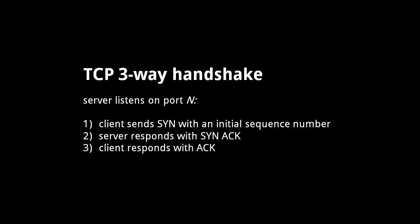Before two hosts start exchanging data over TCP, they first must establish a connection using what's called a three-way handshake. Say we have some server listening on a TCP port. The client first sends to that port a segment with no data, the synchronized flag set, and an initial sequence number — chosen at random for security reasons. The server then responds with its own segment with no data, the synchronized and acknowledged flags set, its own randomly chosen initial sequence number, and an acknowledgement number which is 1 greater than the sequence number received from the client.